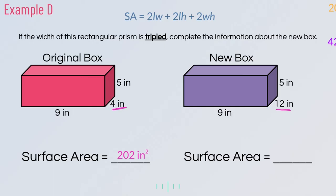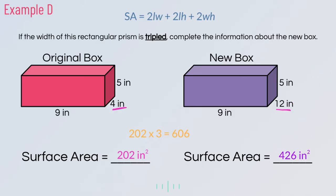Now, unlike volume, we cannot just triple the surface area. If we did, we'd get 202 times 3 equals 606. But the actual surface area of the new box is 426 square inches. So the surface area does go up from 202 to 426, but it does not triple. This confirms that tripling one measurement triples the volume, but the surface area increases by a different amount.